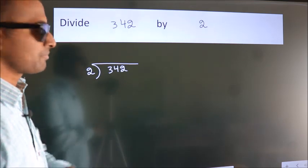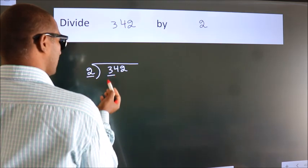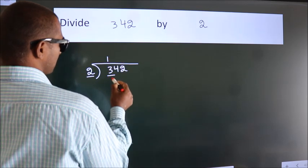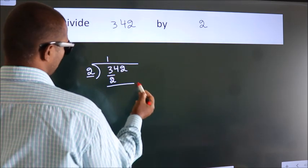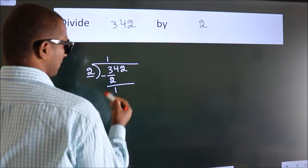Next. Here we have 3, here 2. A number close to 3 in 2 table is 2 1s 2. Now, we should subtract. We get 1.